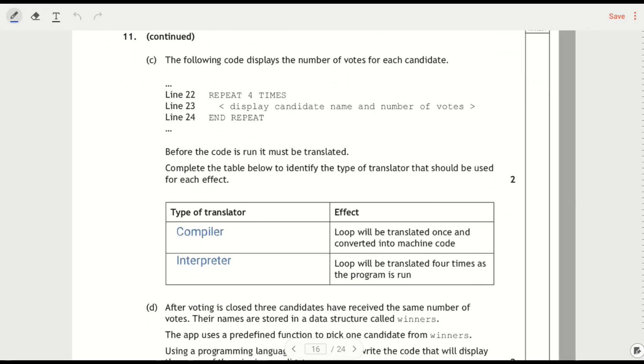And the last couple of things for software development. The following code displays the number of votes for each candidate. Not actually all that important to see what's going on there, because it says before the code is run it must be translated, complete the table to show the type of translator. So the only types of translator we know are a compiler and an interpreter. This is quite a kind of simple compiler and interpreter question because it's purely factual.